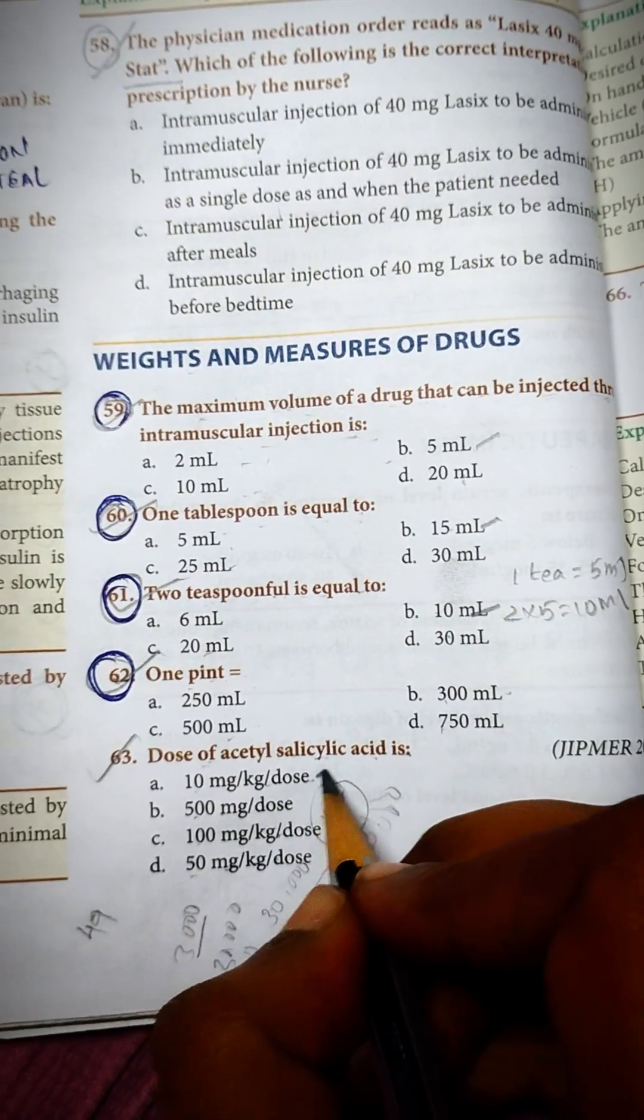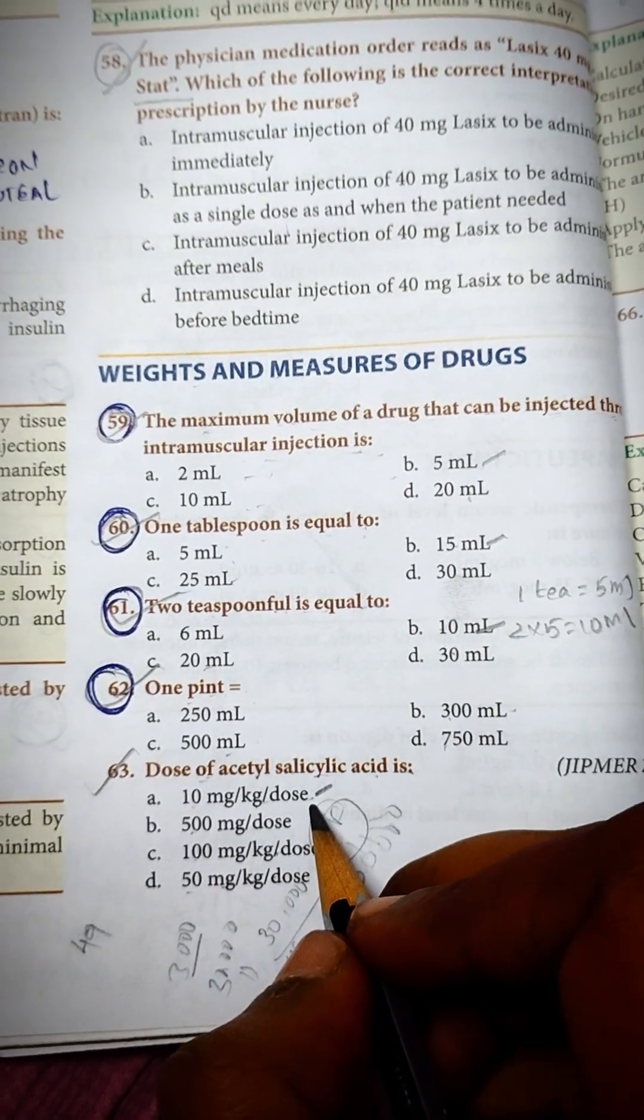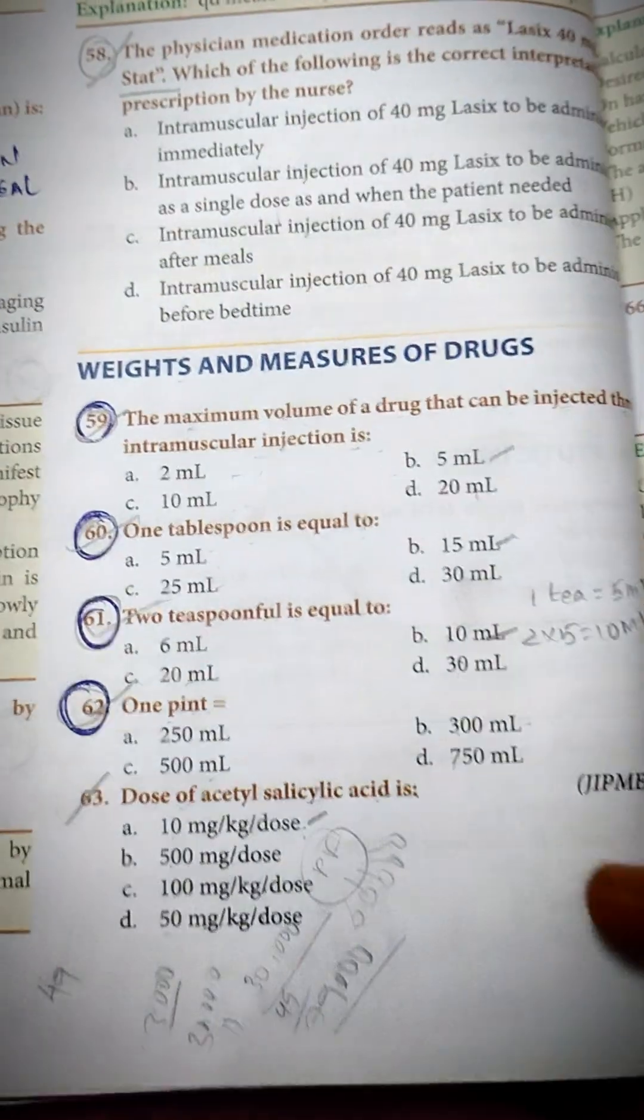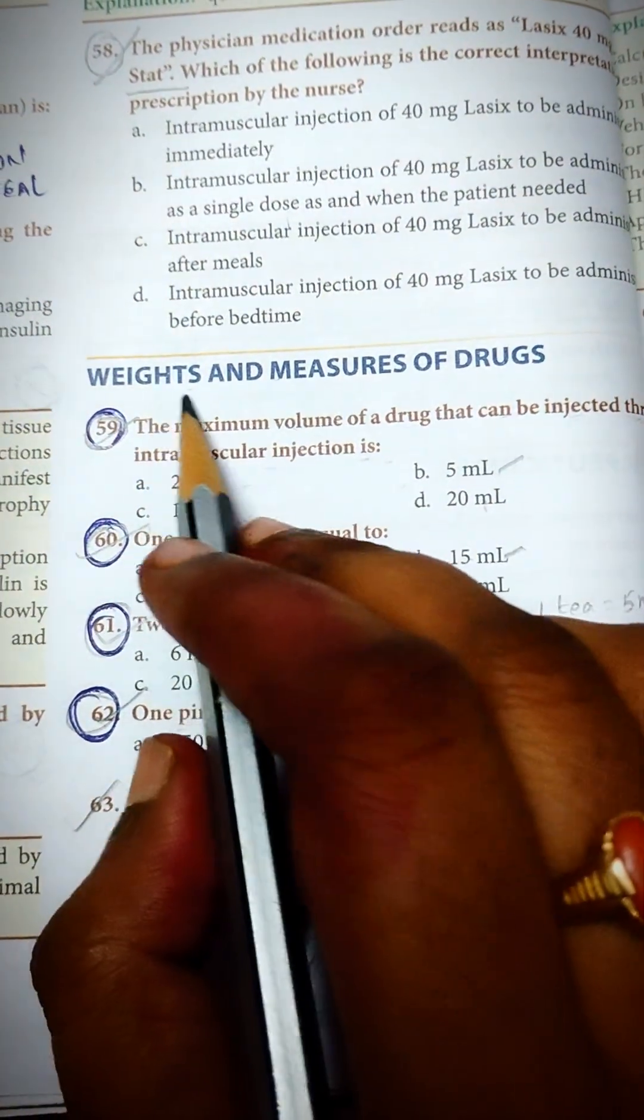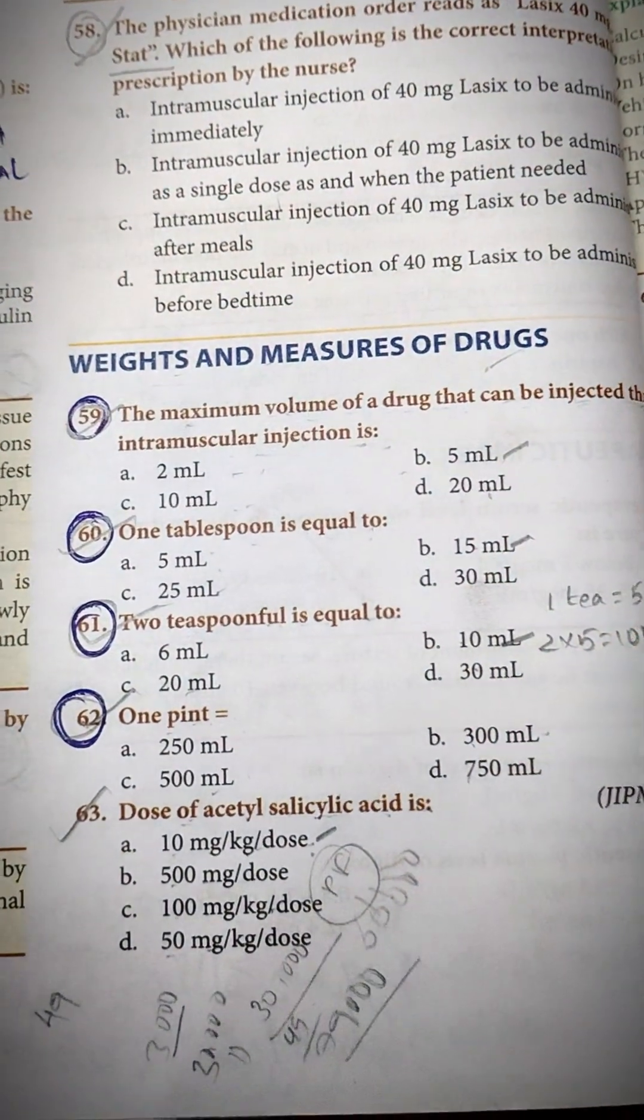Option b 500 ml per kg per dose, option c 100 ml per dose. So these are all the MCQs from weights and measurement of drugs. Thank you all.